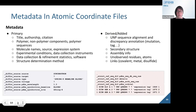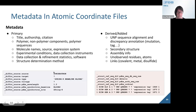Atomic coordinate files also contain metadata information, such as entry title, authorship, citation information, entry composition, source information, experimental details, data collection and refinement statistics, and so on. The files also contain derived and added information — for example, reference to the relevant UniProt sequence with annotation of sequence discrepancies, if there are any, as shown in the example.